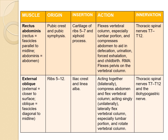Now let us discuss each muscle. First: rectus abdominis. Rectus means fascicles are parallel to the midline; abdominis means related to the abdomen. Origin: pubic crest and pubic symphysis. Insertion: cartilage of ribs 5 to 7 and xiphoid process. Action: flexes the vertebral column, especially the lumbar portion, and compresses the abdomen to aid defecation, urination, forced exhalation and childbirth. Reverse muscle action flexes the pelvis on the vertebral column. Innervation: thoracic spinal nerves T7 to T12.